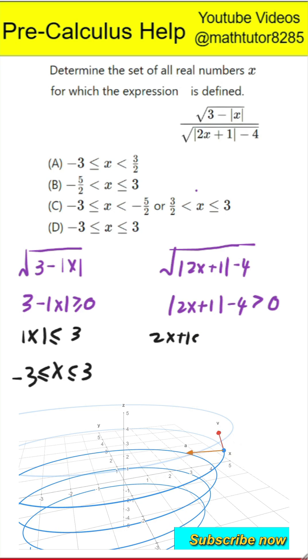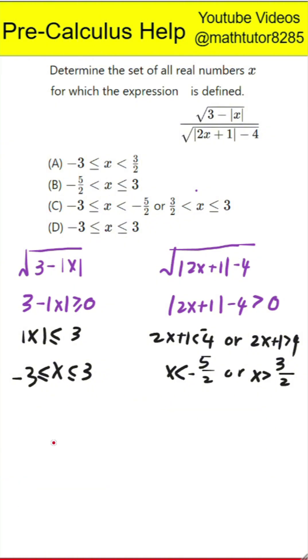From the second condition, we solve that the absolute value of 2x plus 1 is greater than 4. That happens when 2x plus 1 is less than negative 4, or when 2x plus 1 is greater than 4. Solving both, we find that x must be less than negative 2.5 or greater than 1.5.